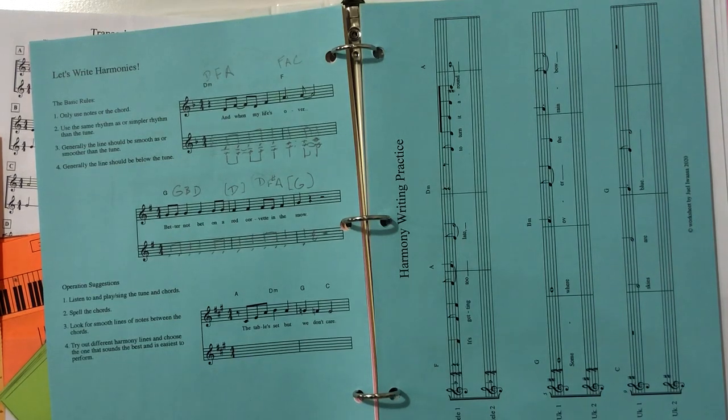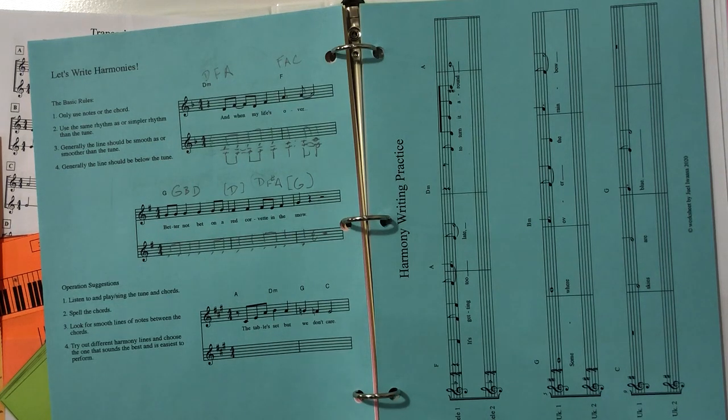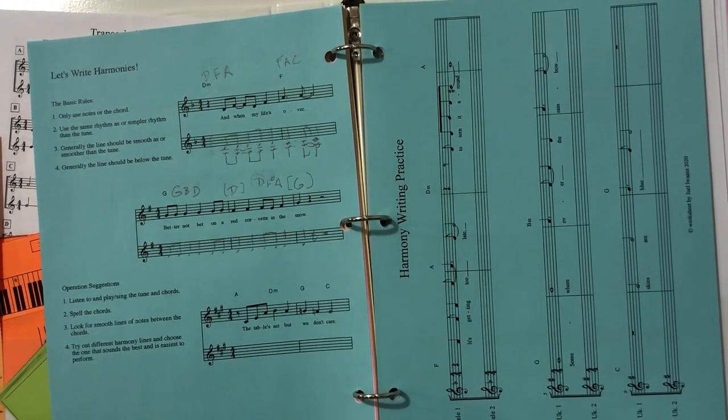So, I can play the D on my uke. Better not bet on a red Corvette in the snow. That's pretty easy, right? So the actual music goes Better not bet on a red Corvette in the snow. And the harmony line would be on the D. Better not bet on a red Corvette in the snow. Again. Better not bet on a red Corvette in the snow. And they sound great together. Right? They'd sound like... Right? That'd be pretty good.